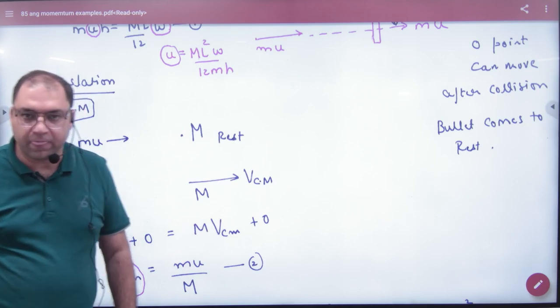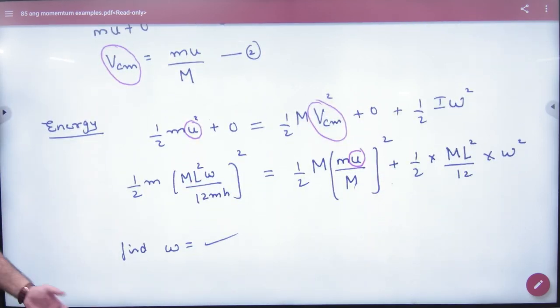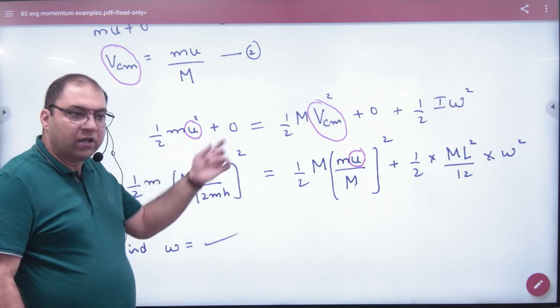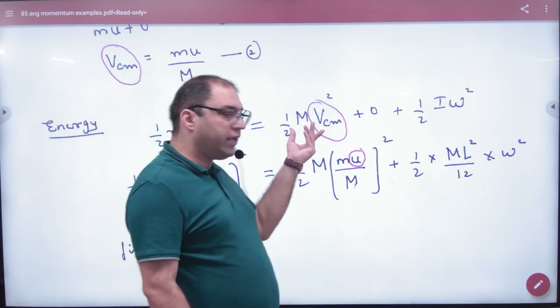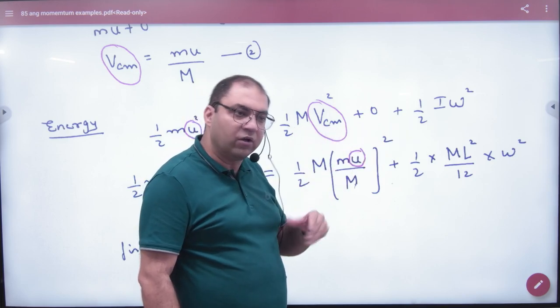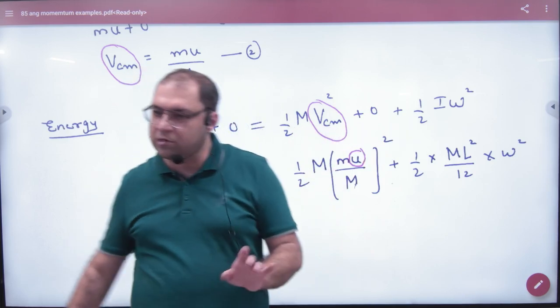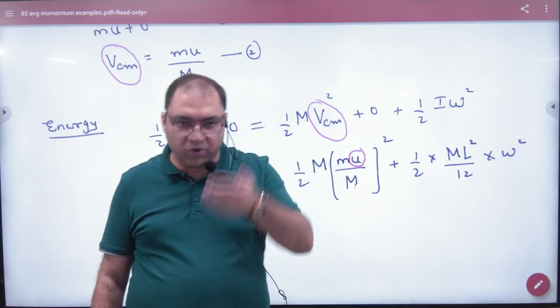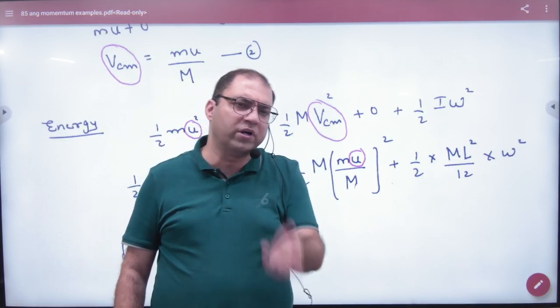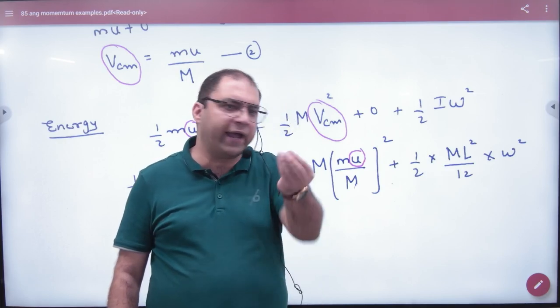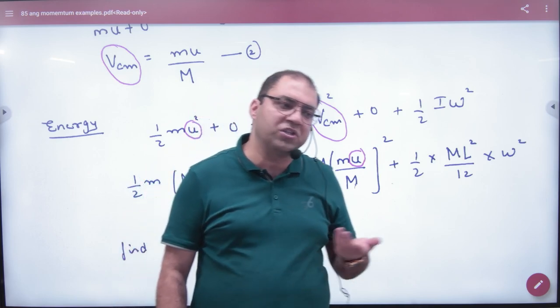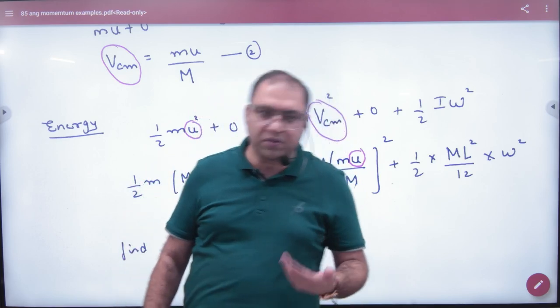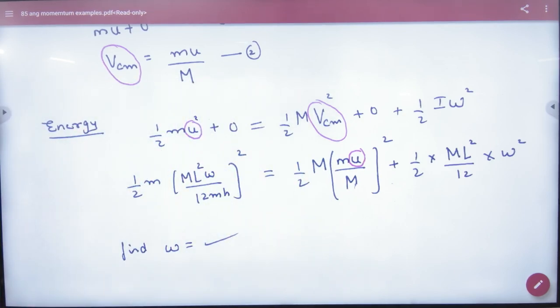Third equation: energy conservation if there is elastic collision with no loss. Half mu² for the particle, half Mv²_cm for rod center of mass motion, plus half I omega² for rotation about center of mass. This is the concept: when rod and bullet collide, angular momentum conservation applies, linear momentum also applies in translation motion, and if no energy loss then energy conservation also applies. This is the method.